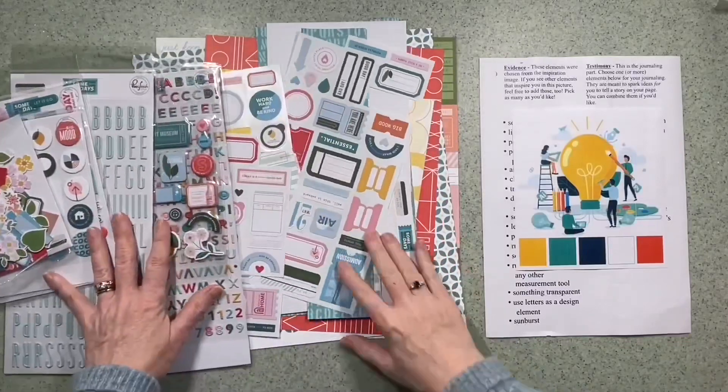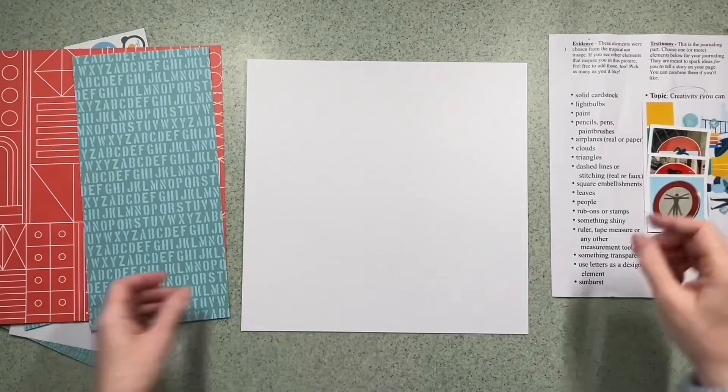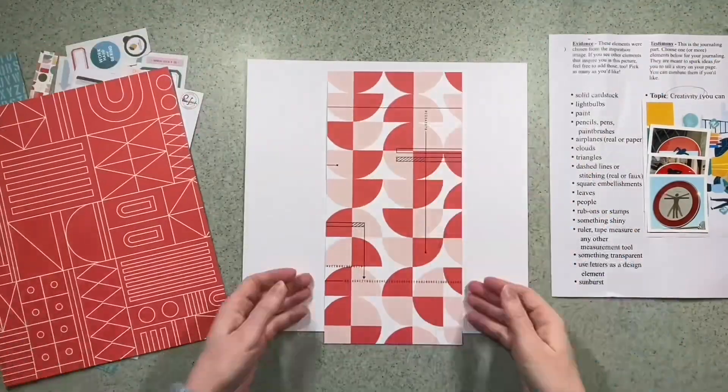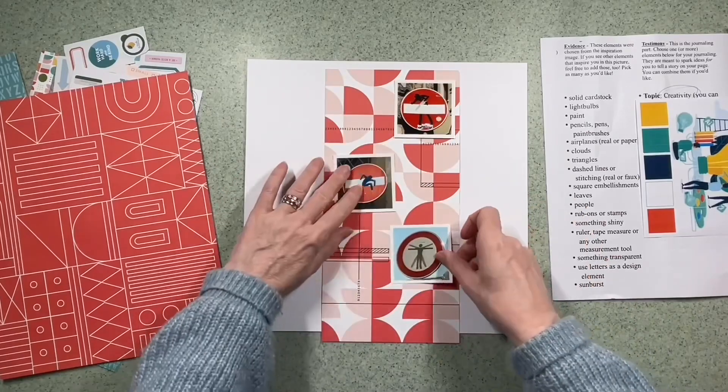So twice a month there are case files that go live and this is case file 406. Using the colours there on the right and the list of evidence as inspiration, I'm going to make myself a layout.